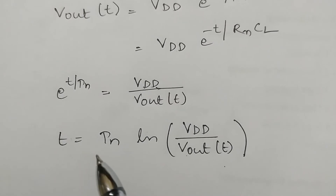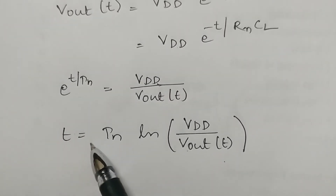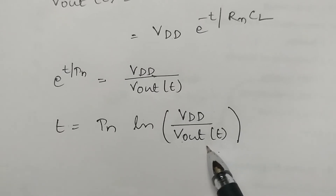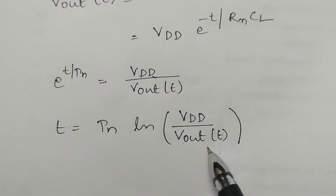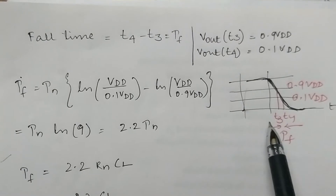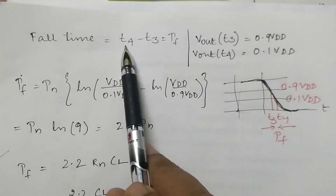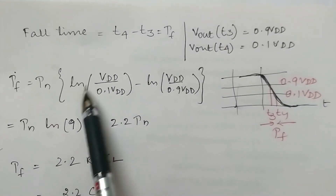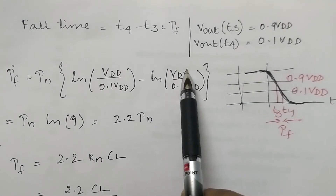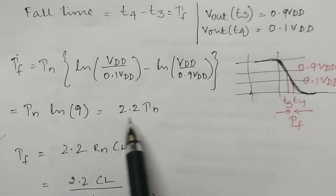Fall time is the time taken for the output to fall from 90% to 10% of its maximum value. At T3 the output is 0.9·VDD and at T4 it is 0.1·VDD, so fall time = T4 − T3. Substituting: τn·ln(VDD/0.1·VDD) − τn·ln(VDD/0.9·VDD) = τn·ln(9) = 2.2·τn.